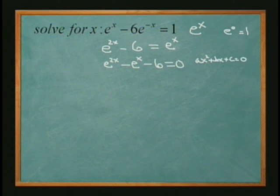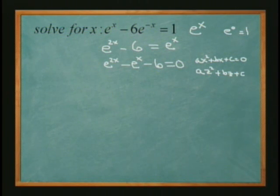And since we already have an x in the equation already, I'm going to make it z. So it's really az squared plus b times z plus c equals 0. And z is going to be equal to e to the x.